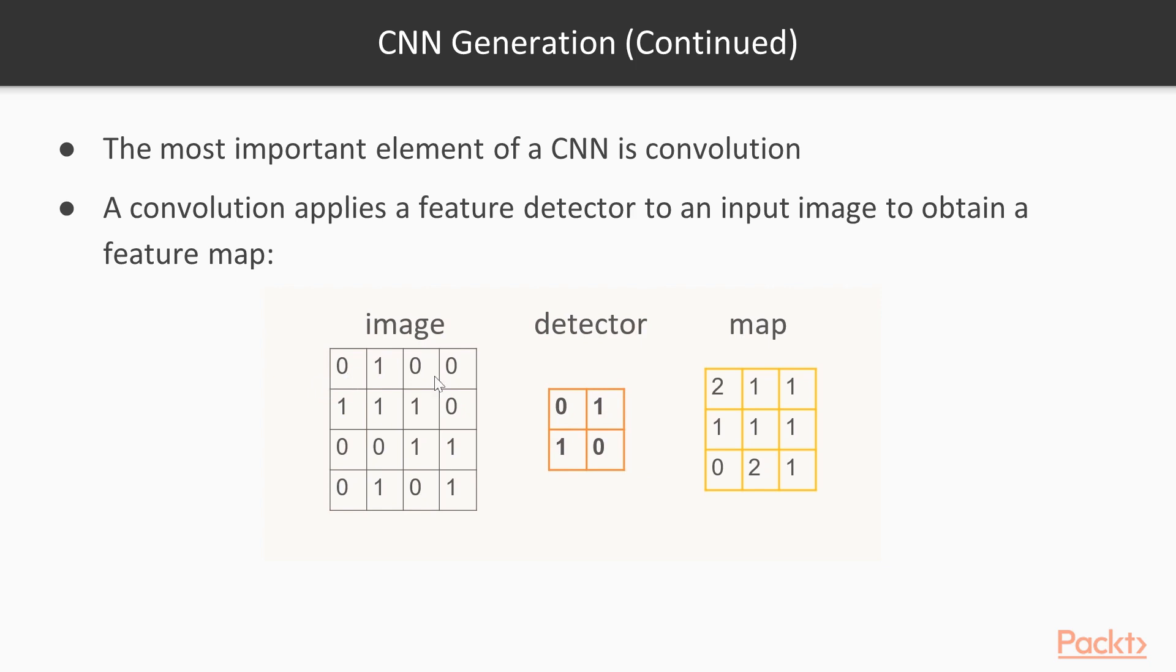So we will do 0 times 0 is 0, plus 1 times 1 is 1, plus 1 times 1 which is 1, so the current sum is 2 in total. So we write 2 to the resulting feature map.